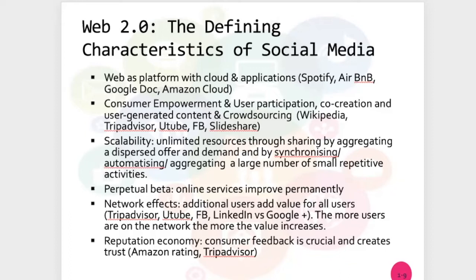And on these platforms, you can find a lot of applications, such as Spotify, Airbnb, and Google Docs, which you can use in a collaborative way. For example, Google Docs — you can share your document on the web, people can participate, you can write together, you can cooperate with students in group work. The first characteristic is that the web is becoming an interactive platform with a lot of applications.